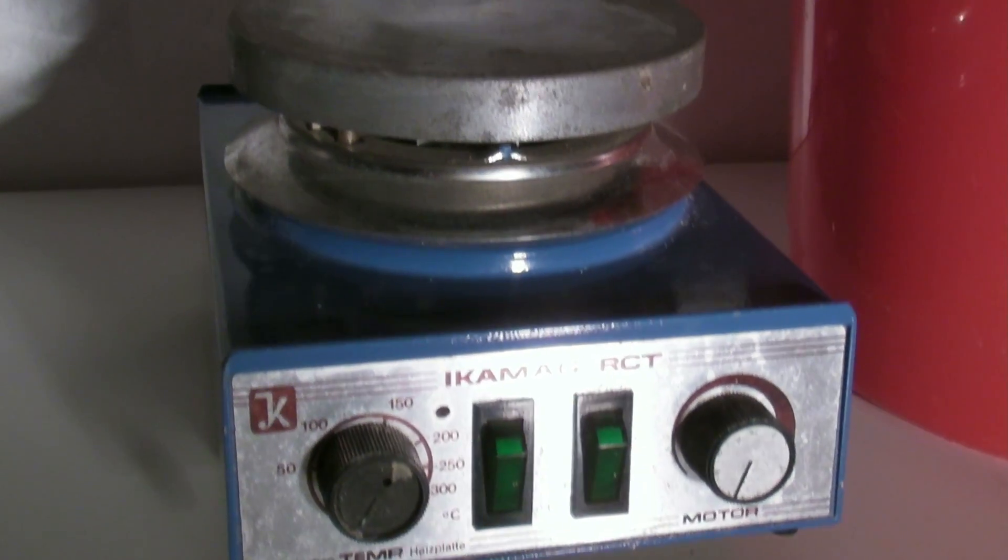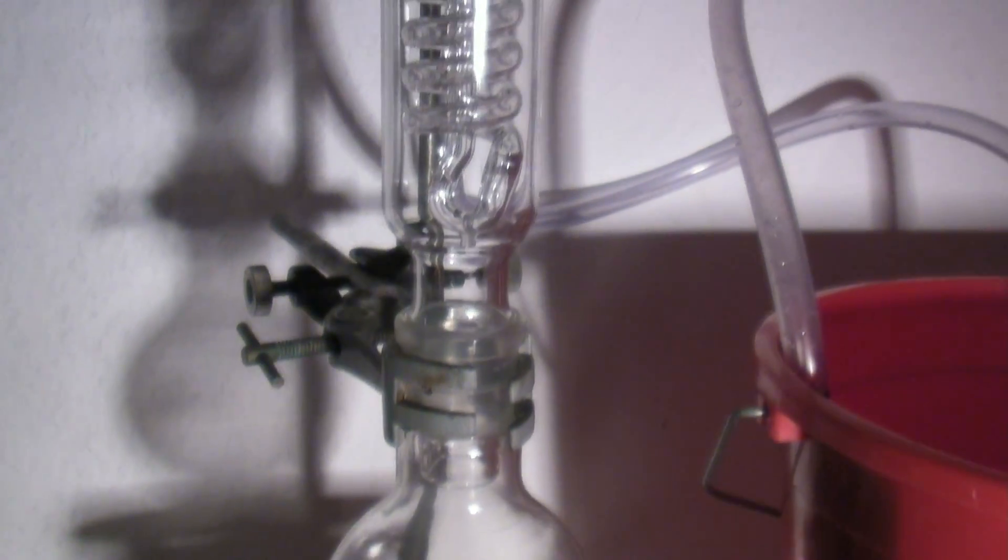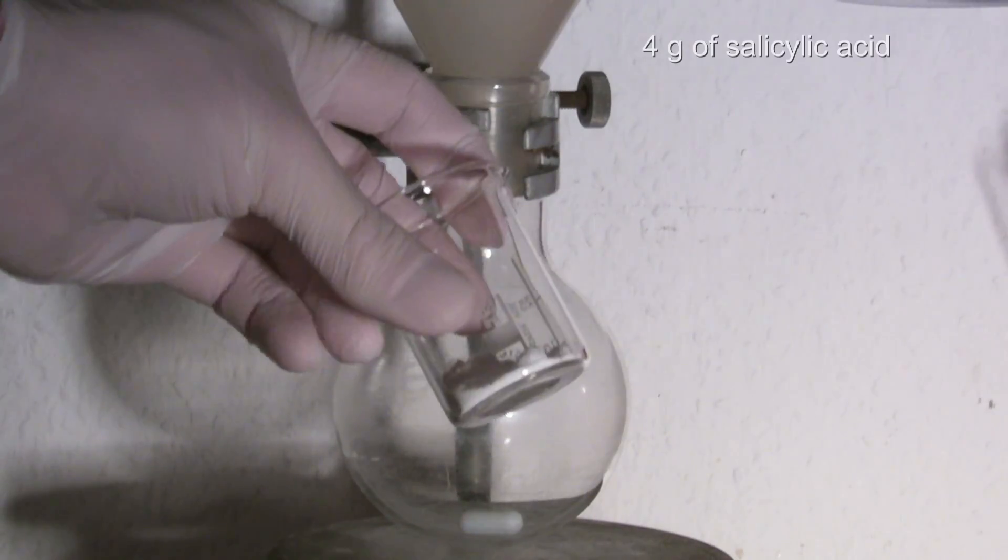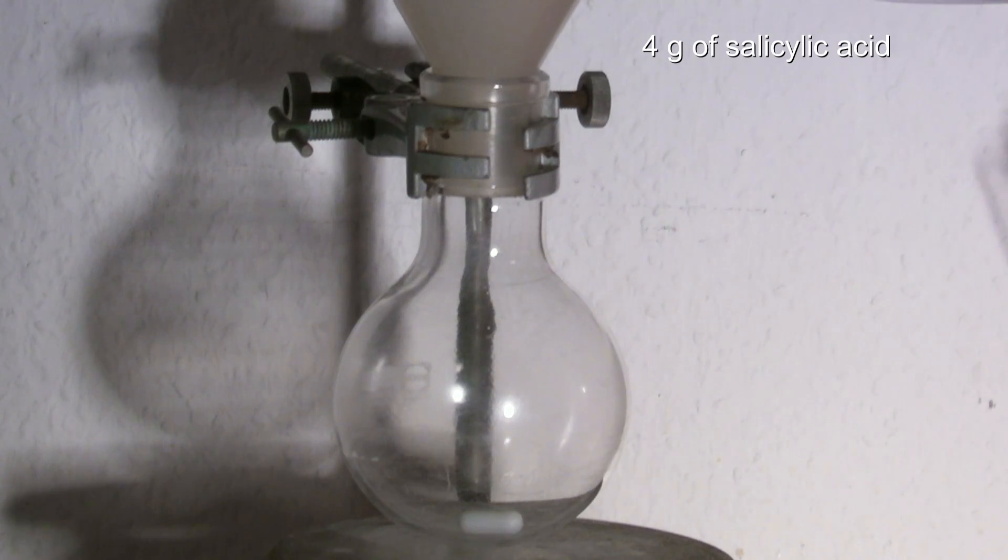The setup is a hot plate, a round bottom flask with a stirring bar and a reflux condenser. First, 4 grams of salicylic acid are added to the flask.